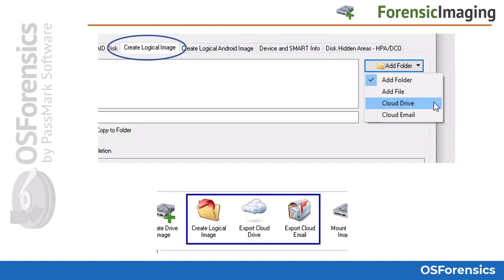The Create Logical Image tab allows the investigator to copy files and directories from one or more source devices to a destination folder or image file, preserving as much file system metadata as possible. This is useful for cases where making a complete drive image of the evidence device is not preferable.